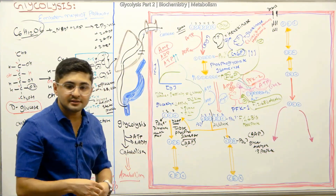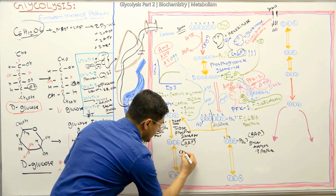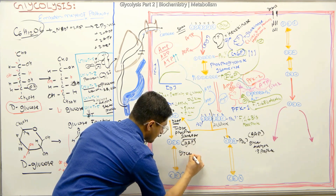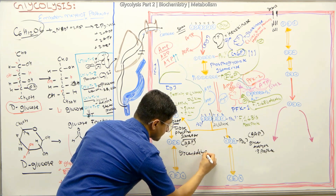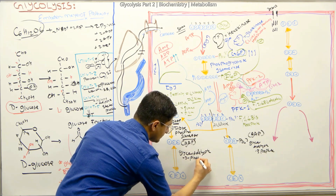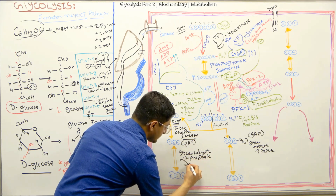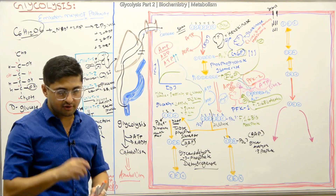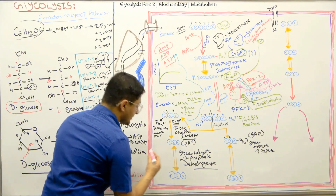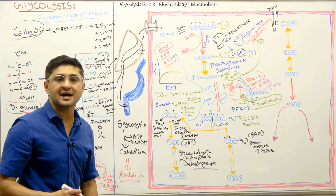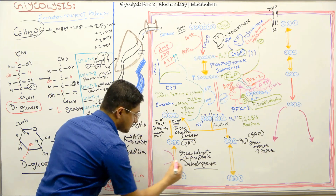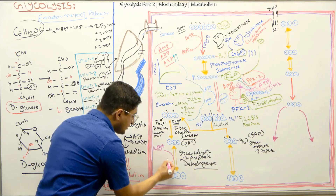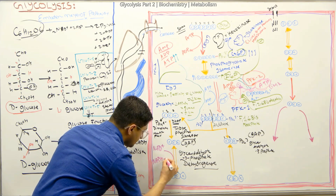When you form GAP, what is going to happen to this GAP? This GAP is going to encounter glyceraldehyde-3-phosphate dehydrogenase enzyme. This is very important because this is where the oxidative reaction is taking place. You're going to use NAD+, and this NAD+ is going to be reduced to form NADH plus H+. That's what it does.